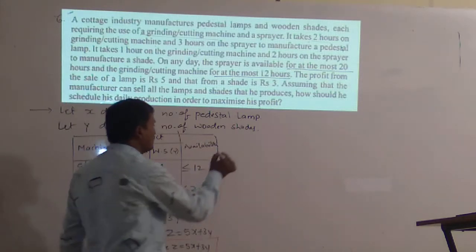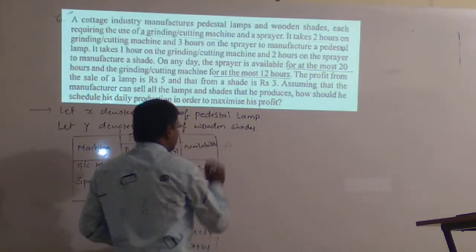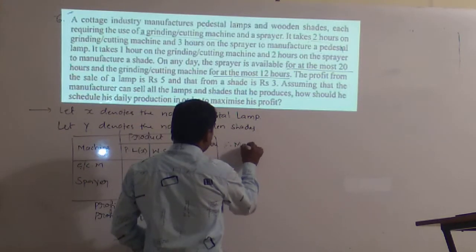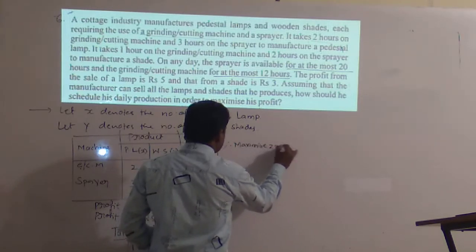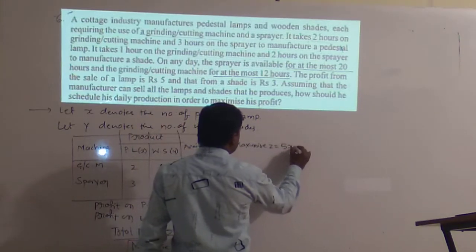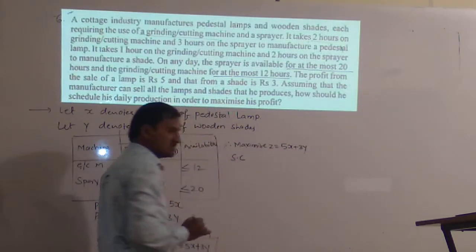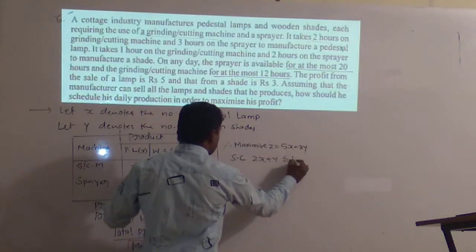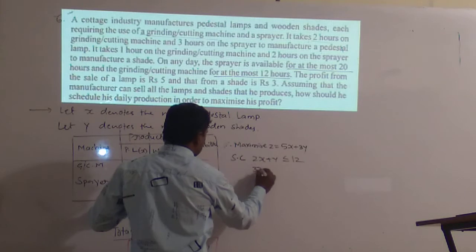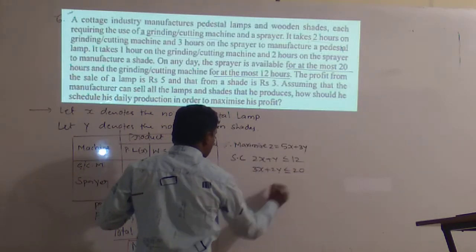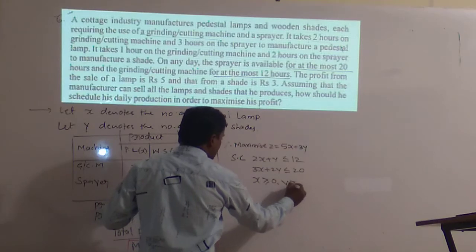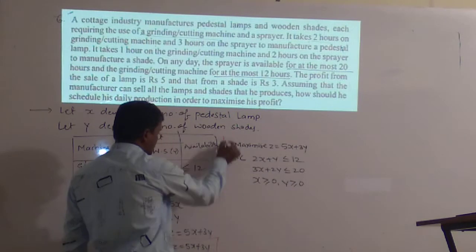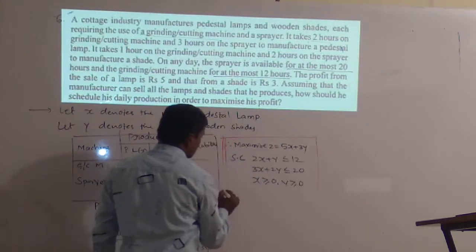Now we will write the constraints. The complete mathematical formulation of this problem is: Maximize Z = 5x + 3y, subjected to the conditions: 2x + y ≤ 12, 3x + 2y ≤ 20, x ≥ 0, y ≥ 0. Now we have the mathematical formulation of the problem.